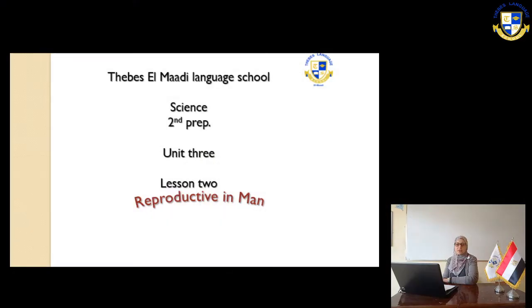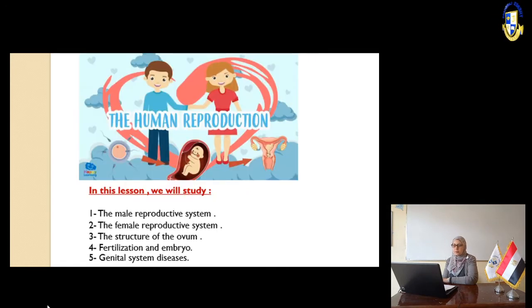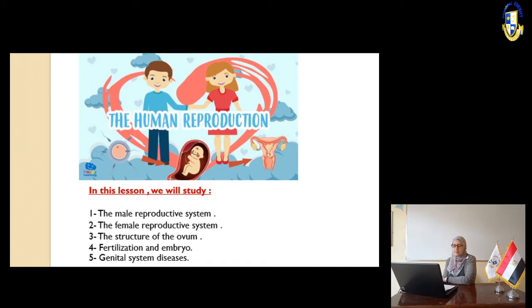Good morning. I'm Miss Jasmine, science teacher. We are going to cover today Unit 3, Lesson 2: Reproductive and Immune systems. In this lesson we will study the male reproductive system, the female reproductive system, the structure of the ovum, fertilization, and genital system diseases.